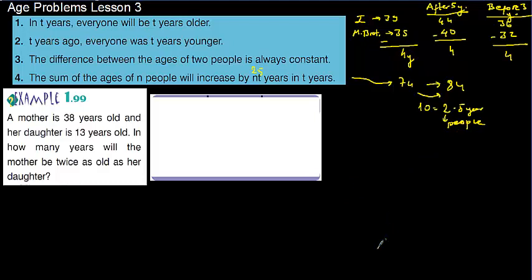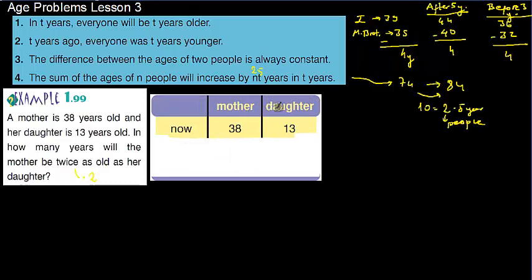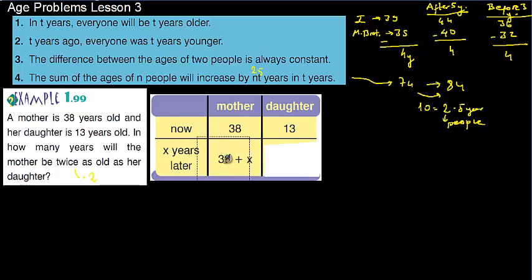After this explanation, let's start to solve our questions. A mother is 38 years old and her daughter is 13 years old. In how many years will the mother be twice as old as her daughter? Twice means when you multiply one of the ages by 2, it gives the other one. So after x years, the mother should be 38 plus x and the daughter must be 13 plus x.